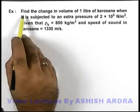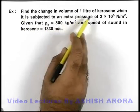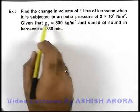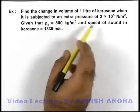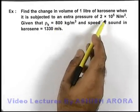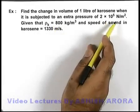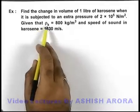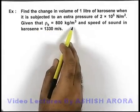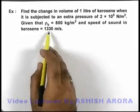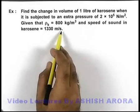In this example we are required to find the change in volume of 1 liter of kerosene when it is subjected to an extra pressure of 2×10⁵ N/m². Given that density of kerosene is 800 kg/m³ and speed of sound in kerosene is 1330 m/s.